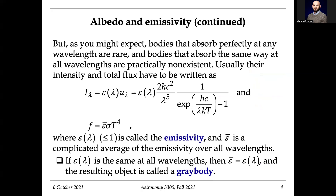Bodies that absorb the same way at all wavelengths are practically non-existent. Generally speaking, we have an emissivity function — this little epsilon here — and it's going to be a function of wavelength. It's always less than or equal to 1. The idea of albedo is how much we're reflecting, and emissivity is similar — it's how much of the light is getting through.